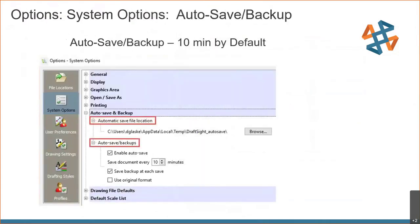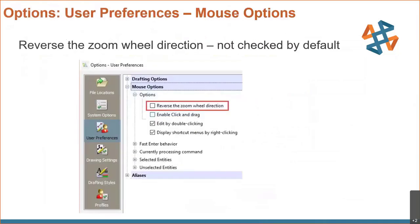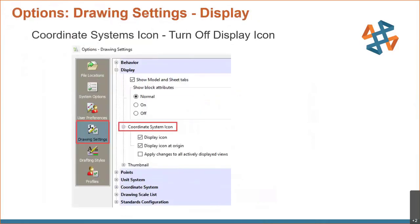For auto-save and backup, we can define where we want to put those files and also change the time interval for auto-saving. And then reverse zoom wheel — if you're an AutoCAD user and want to keep it the same as AutoCAD, don't check this button. If you want your DraftSite mouse wheel to act like the default SolidWorks setting — which is kind of backwards from AutoCAD — you would check this box.